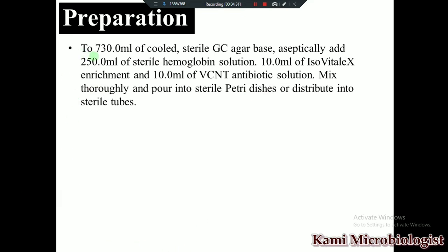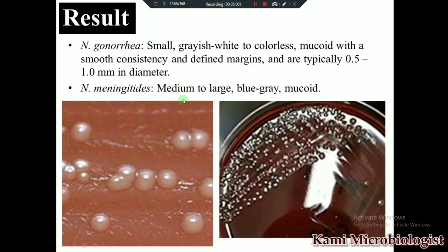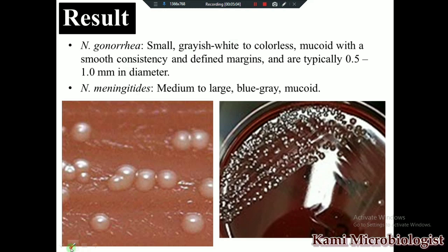Now the preparation of this media — simply we prepare it by adding 730 ml of GC agar base, then we add 250 ml of sterilized hemoglobin solution, 10 ml of Isovitalex enrichment medium, and 10 ml of VCNT supplement, which contains vancomycin. Then we mix it, sterilize it, and pour it into sterilized plates.